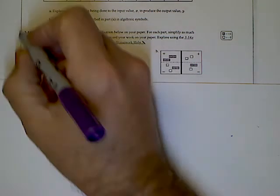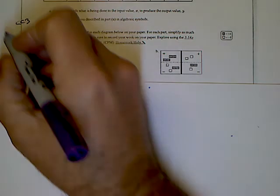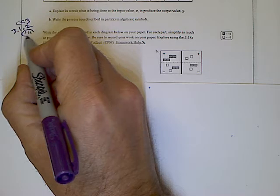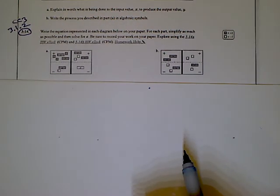All right, we are in CC3, section 3.1.2, specifically number 3-14. We have some equations that we need to build from the equation mats and the tiles that they give us.